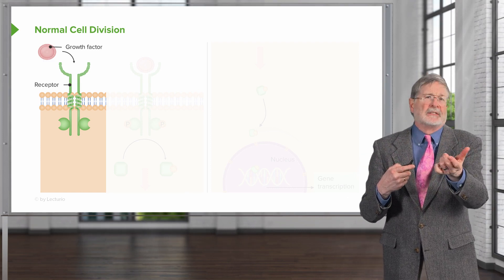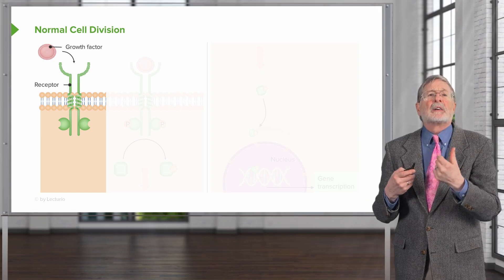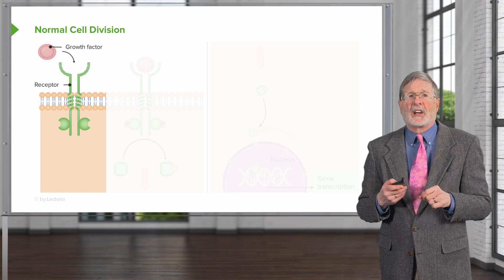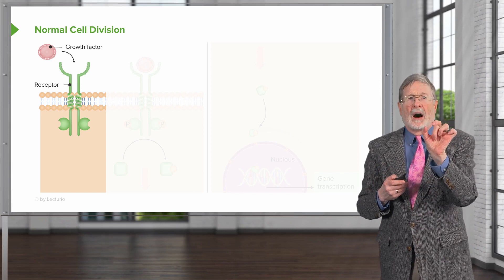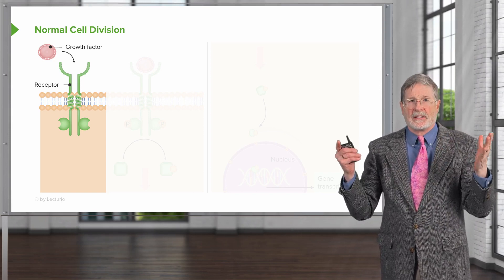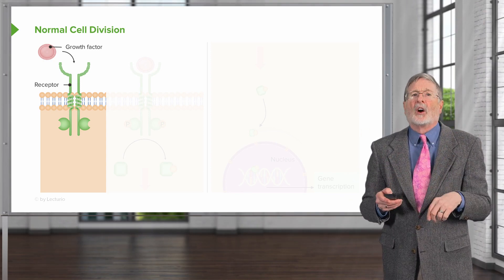So in a normal cell, this is a schematic where a growth factor is coming in. It is going to bind to and dimerize proteins that are in the membrane.